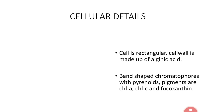Chromatophores are band-shaped and contain pyrenoids, which are proteinaceous reserve food material storing bodies. Generally, chromatophores show chlorophyll A and chlorophyll C. Along with these two chlorophylls, there is another pigment called fucoxanthin. Because of the dominance of fucoxanthin, Ectocarpus species generally appear brown in colour, and hence they are called brown algae.